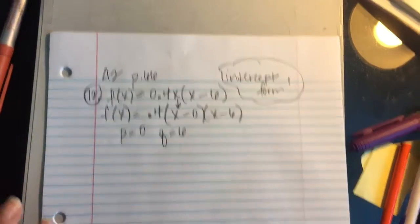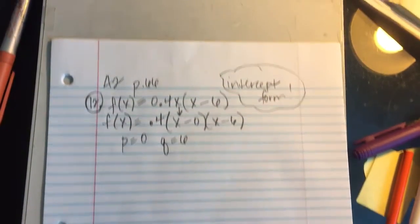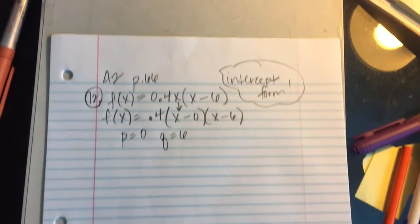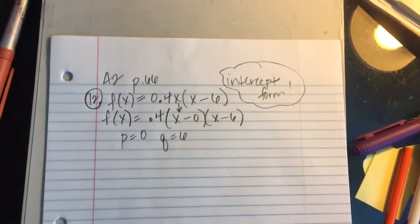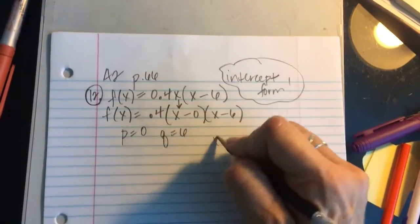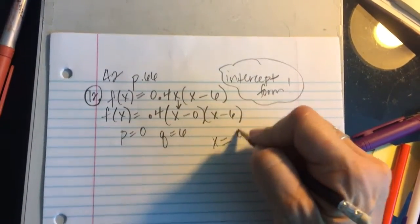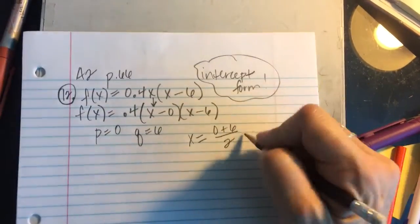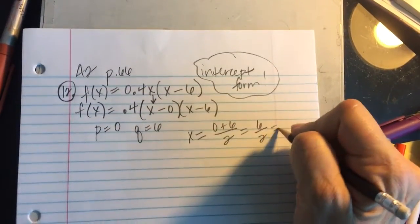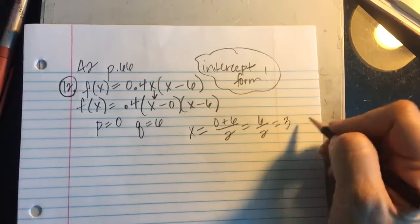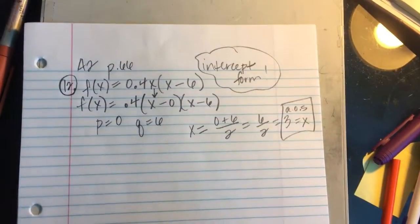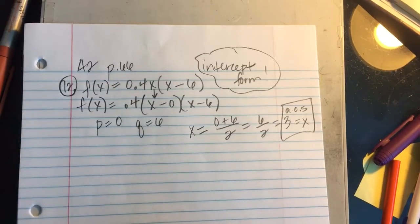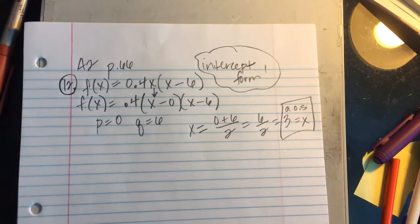And we were messing around with intercept form and knowing that the x value of the vertex, and I'm looking back at my notes, but if I remember correctly, the axis of symmetry x equals p plus q divided by 2. And if that's the axis of symmetry, that's actually the x value of the vertex.